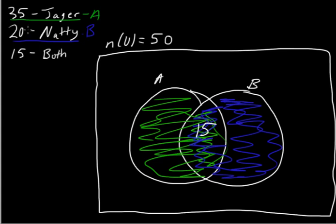You have up here, you have a total of 20 students drinking Natty. And you know that you have 15 drinking both Jägermeister and Natty. So that accounts for 15 of the 20 students drinking Natty. So you know that, well, if there's 15 in the intersection, you know that there can only be 5 left.